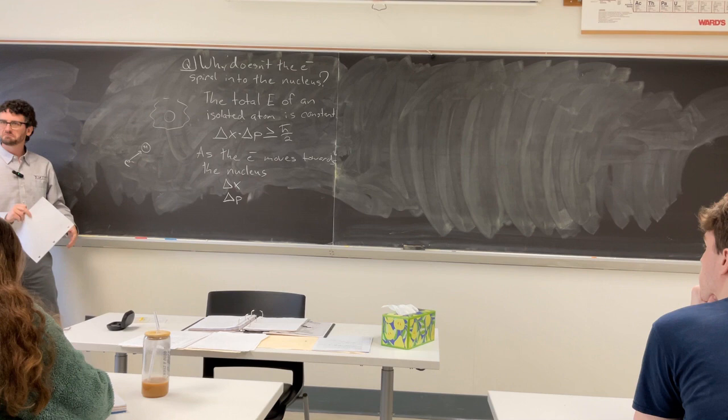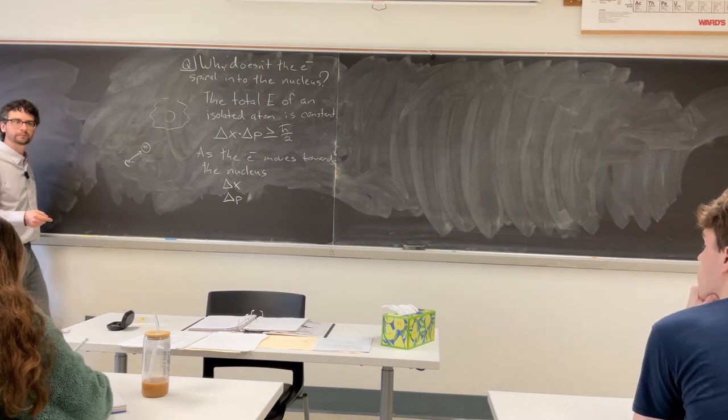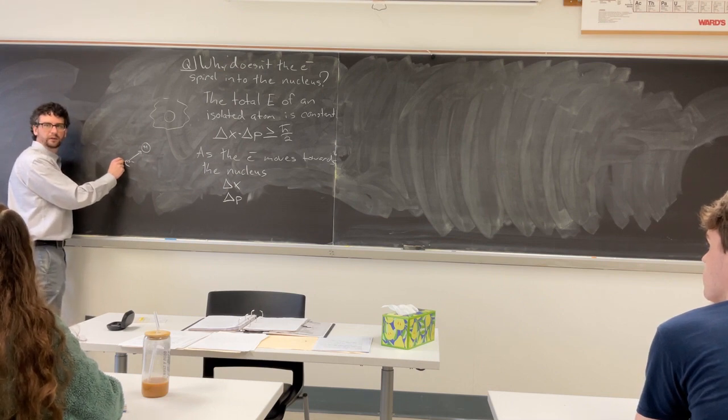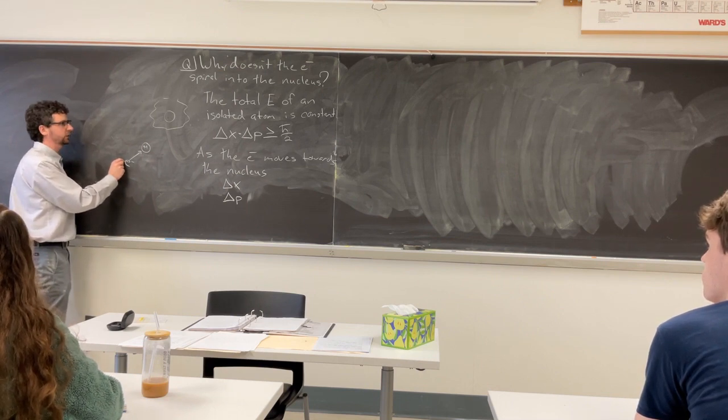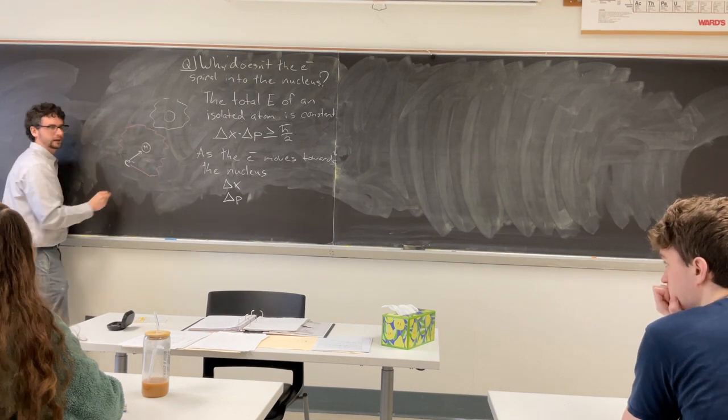So we said there's an electron cloud around this atom, right? So out here, how big is the electron cloud? Let's assume a spherical distribution. Like that.